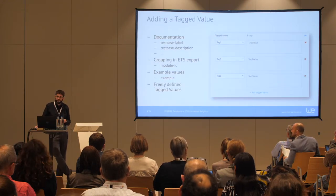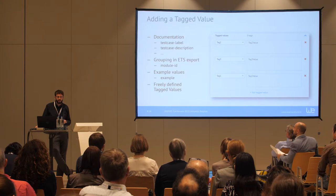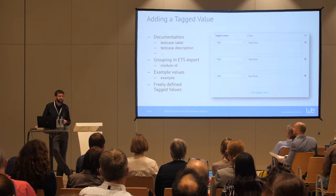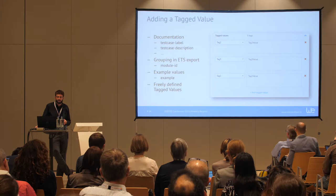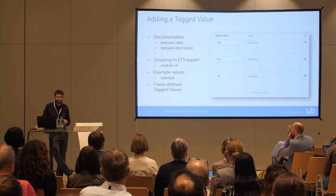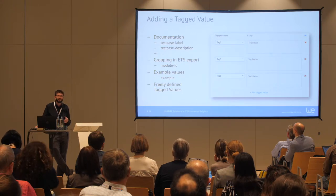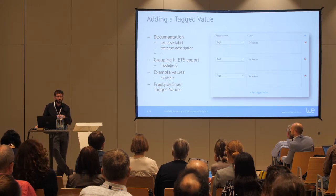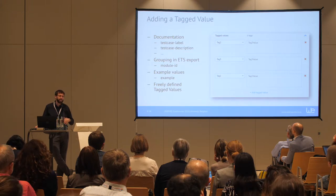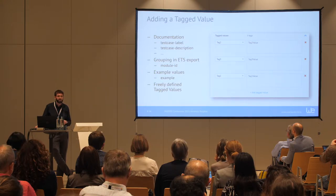We also added tagged values — basically for adding documentation. Since the export is an executable test suite, we need to group, label, and describe the individual test cases. We use things like test case label and description. Here's also where we put example values so that, if you want to generate example XML files later, you can provide concrete examples. Otherwise, the tool just generates random content. You can also add freely defined additional info that might be needed for future UML exports or other features.